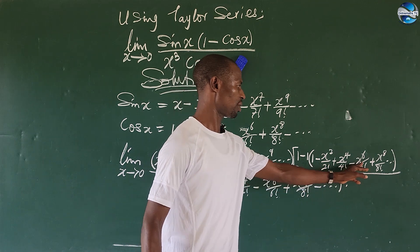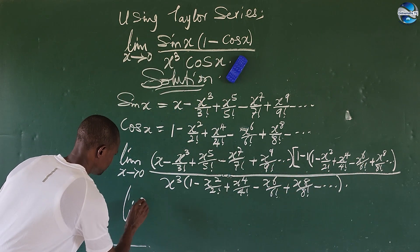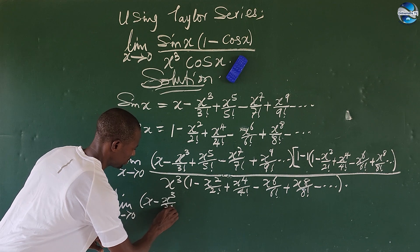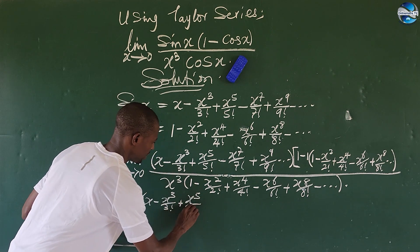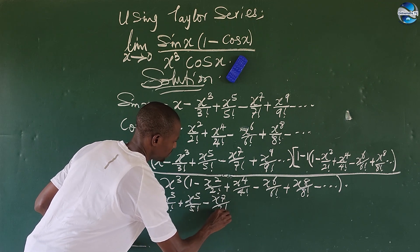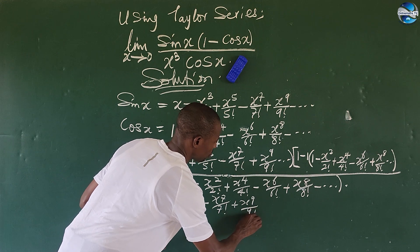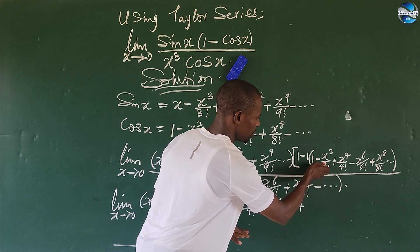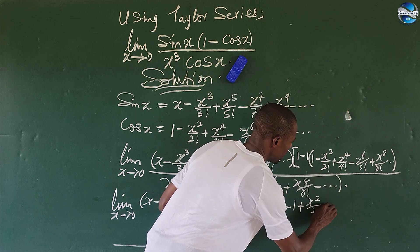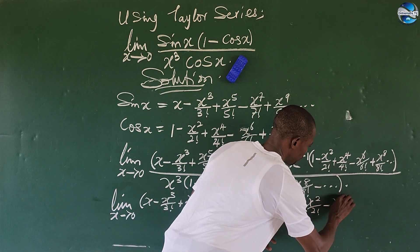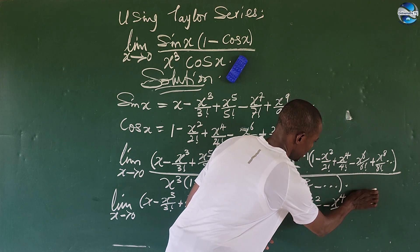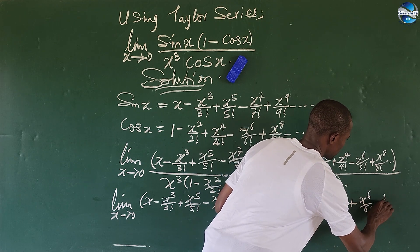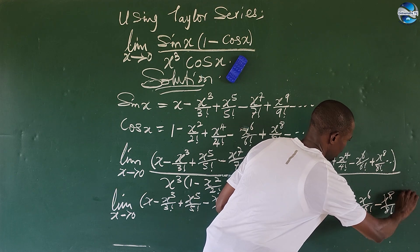Now we use the minus sign to open up the bracket. This gives us the limit as x approaches zero: x minus x to the power of three all over three factorial, plus x to the power of five all over five factorial, minus x to the power of seven all over seven factorial, plus x to the power of nine all over nine factorial. Then the one minus one cancels, changing the signs: minus x to the power of two all over two factorial becomes negative, minus x to the power of four all over four factorial, plus x to the power of six all over six factorial, minus x to the power of eight all over eight factorial.